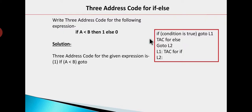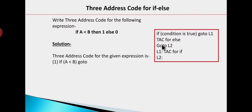Here we will see how we can write three address code for if-else statement. As you can see in the red rectangle, this is the way you have to write three address code. First write 'if' and then the condition. If the condition is true, then you go to label n1. At n1, we write the three address code for the if part. In the next statement, we write the three address code for the else statement. When the three address code for the else portion is complete, we write 'go to n2'. n2 represents the statement outside the if-else block.